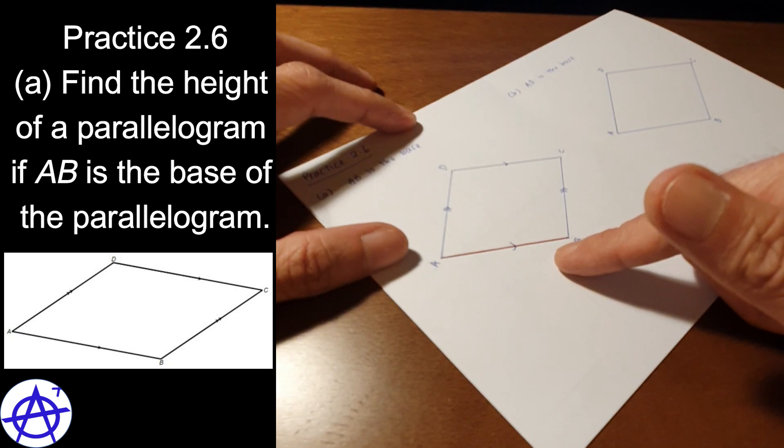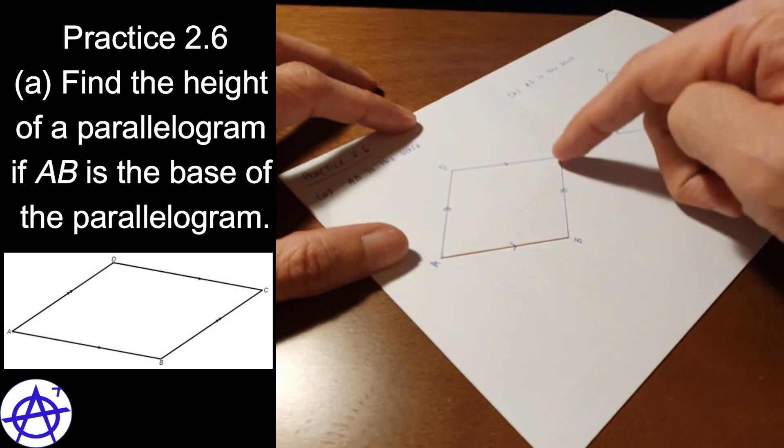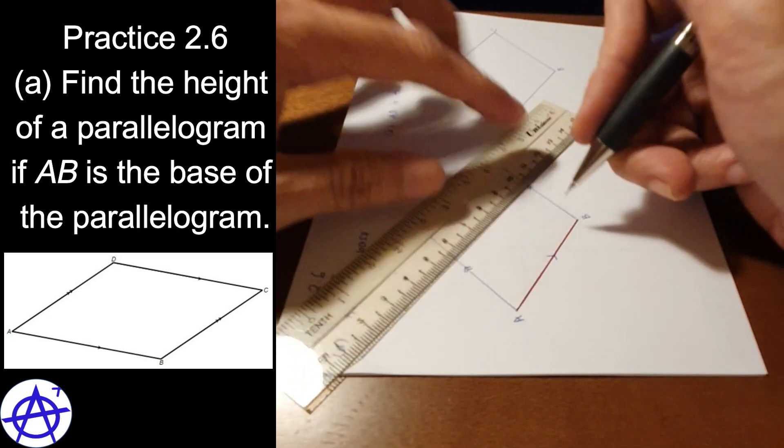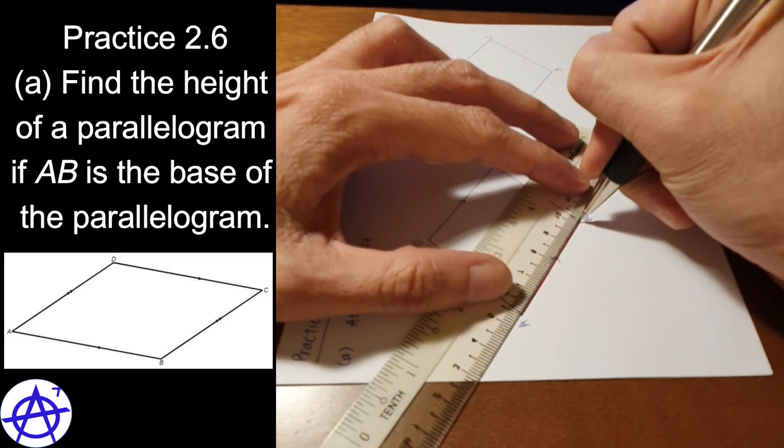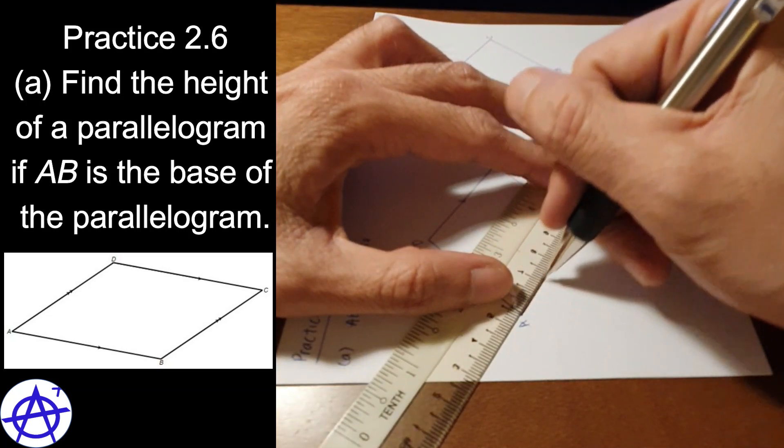Which means we need to find the perpendicular distance from this line DC to this line AB. So what I'm going to do here is, I just use one of the points C or D, but by extending the line AB, so that I have enough space for the line.